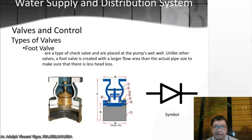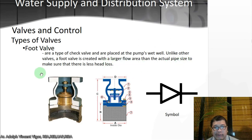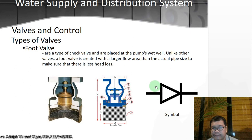Then you have a foot valve — a type of valve placed at the pump inlet in a well. Unlike other valves, a foot valve is created with a larger flow area than the actual pipe size to ensure less head loss. This is its symbol.